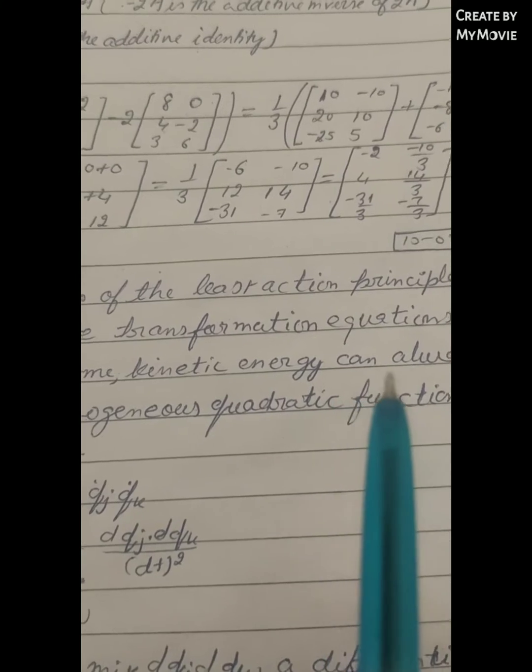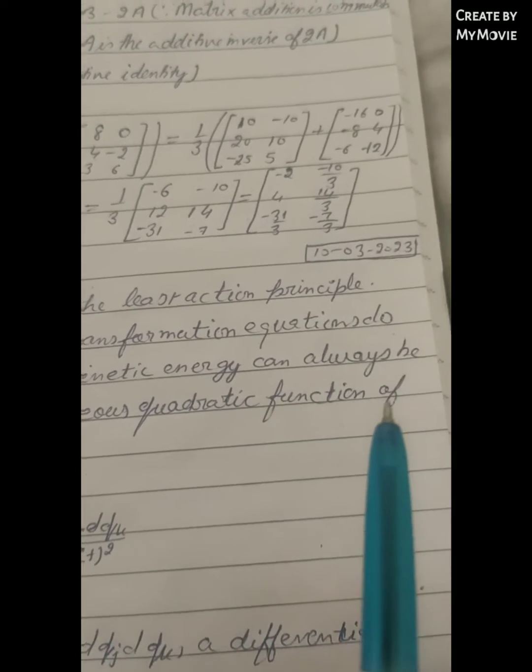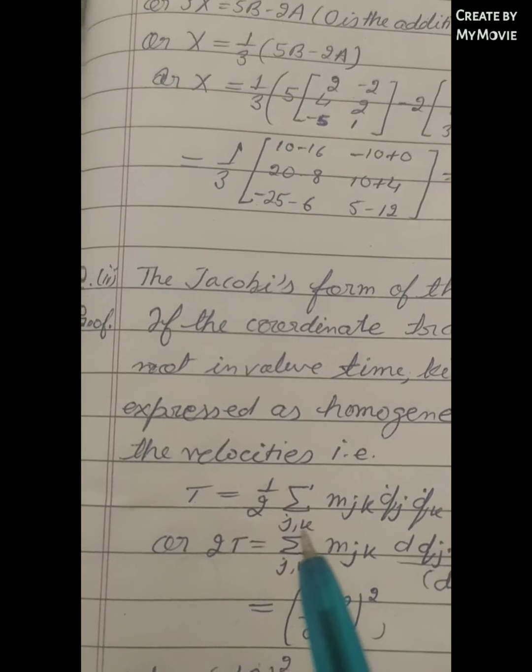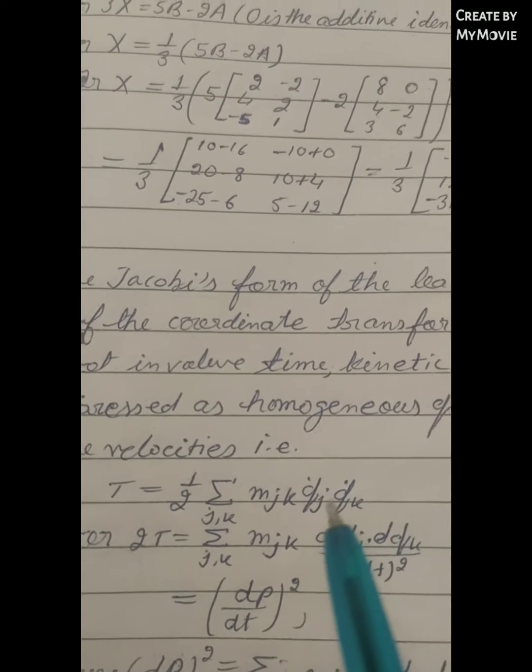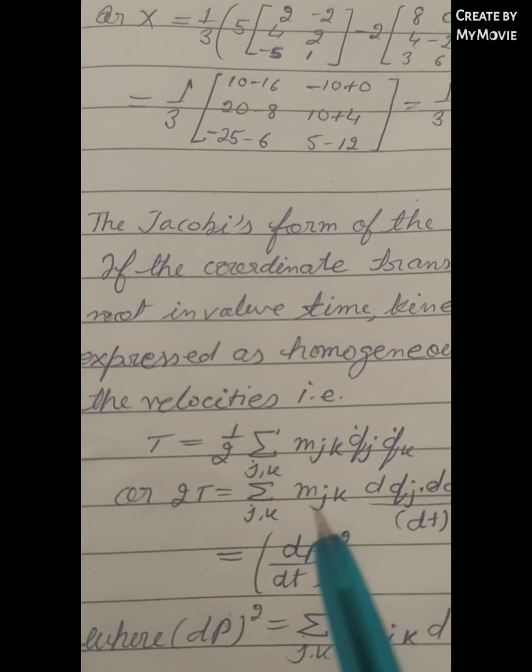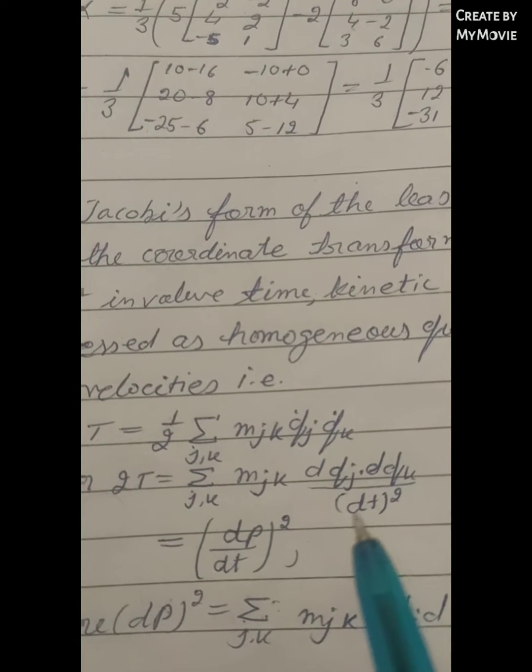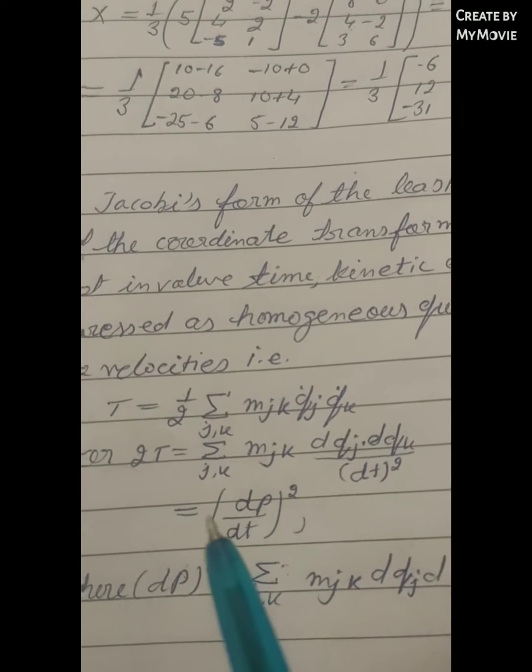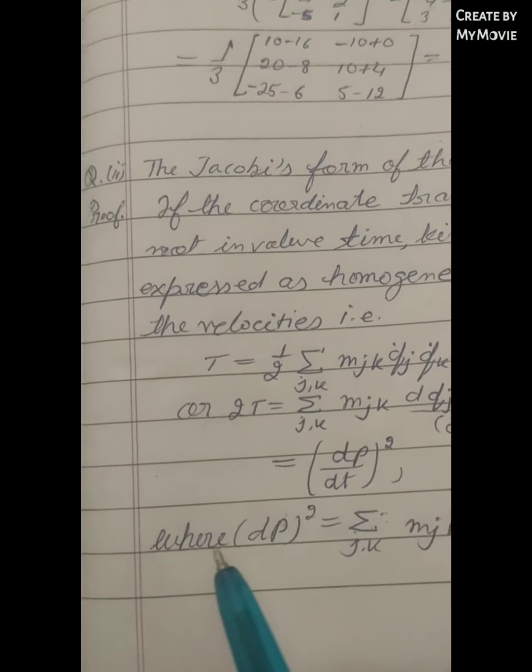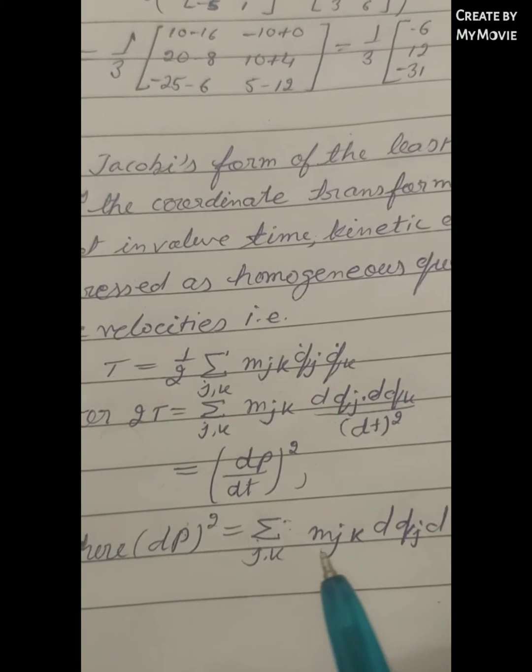That is, T equals half sigma ij m_jk q_j dot q_k dot, or 2T equals sigma jk m_jk dq_j dq_k upon dt squared, which equals (d rho upon dt) whole squared, where (d rho)^2 equals sigma jk m_jk dq_j dq_k.